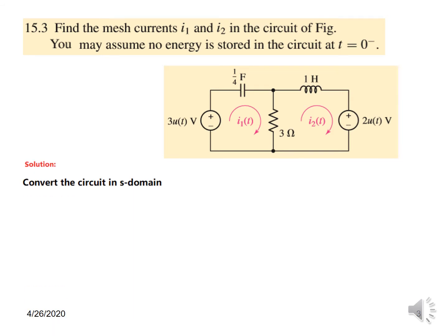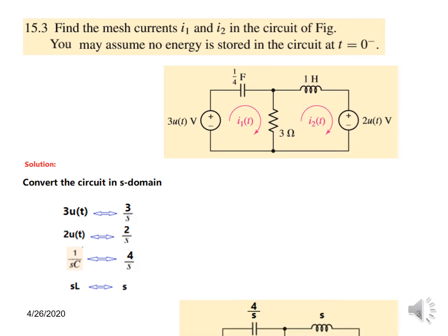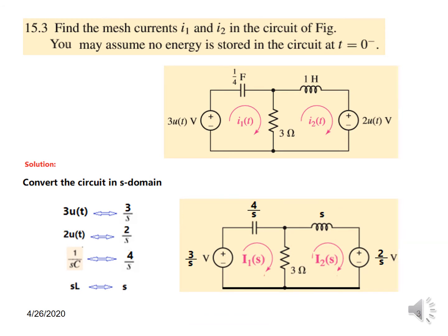Converting into the S domain: the voltage source 3u(t) can be written as 3 over S. Another voltage source 2u(t) can be written as 2 over S. The capacitor 1 over 4 can be written as 1 over SC; putting in the value of C as 1 over 4, it becomes 4 over S. The inductor SL can be written as S because L equals 1. So this is our Laplace domain or S domain circuit that we need to solve.